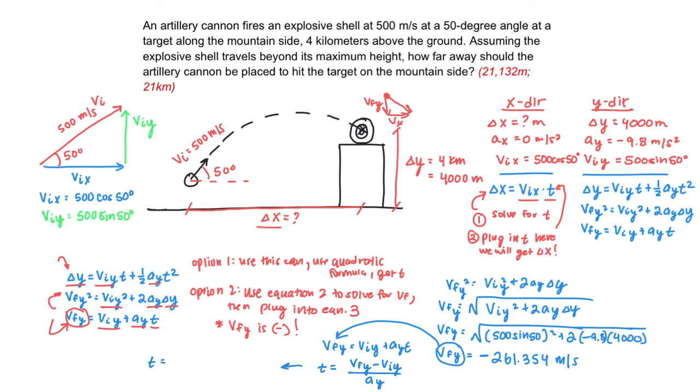So then, I'm running out of room here. T would be equal to VFY, that's that negative 261.354, minus my V initial Y, which was that 500 sine 50, over my acceleration. And in this case, my acceleration is negative 9.8, which will give me a time of 65.75 seconds to hit the target.